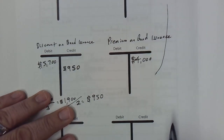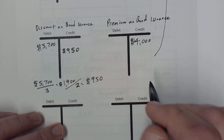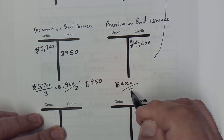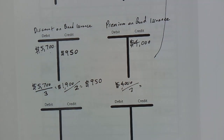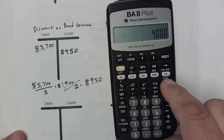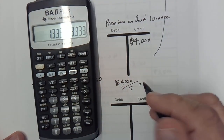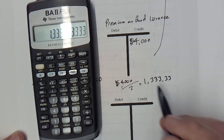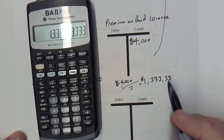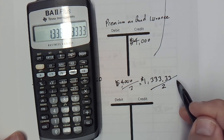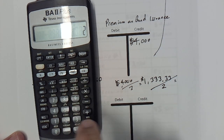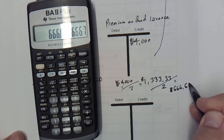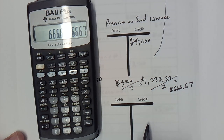Now let's amortize this over three years. We start with the $4,000 premium, divide by three, giving us $1,333.33 annually. Since payments are semi-annual, we divide by two again, giving us $666.67 per payment period.